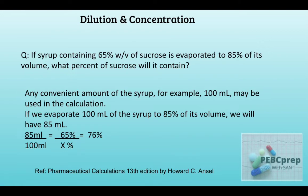If we evaporate 100 milliliters of syrup to 85 percent of its volume, we get 85 milliliters. There is no hard rule to assume 100 mL, but it makes the calculation easy. So if we have 65 percent in 100 mL and we now have 85 mL, using proportions we calculate the new concentration — it comes out to 76 percent.